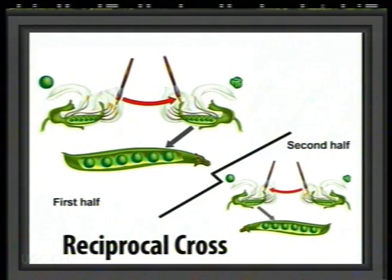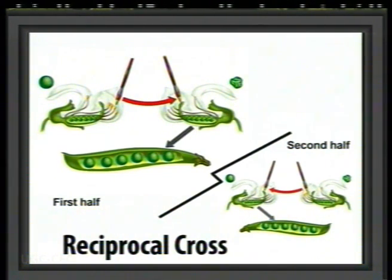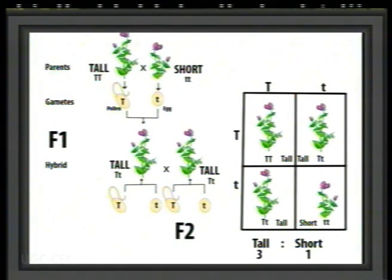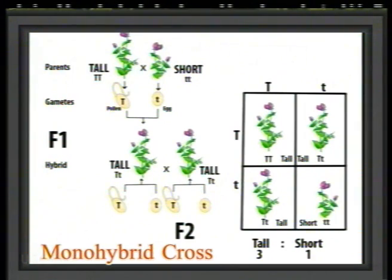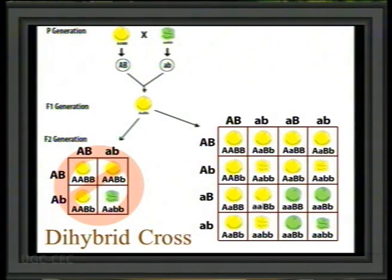Mendel further noted that the results from reciprocal crosses were identical. Since garden peas are sexual organisms, each cross can be performed in two ways. The two crosses in which the same two parents are involved, but the variety which serves as the male parent in one cross is used as the female parent in the other and vice versa, is called a reciprocal cross. A cross between parents differing for a single character is termed a monohybrid cross, while those between parents differing for two and three characters are known as dihybrid and trihybrid crosses respectively. Results from monohybrid crosses for the remaining six characters were identical with those for plant height.